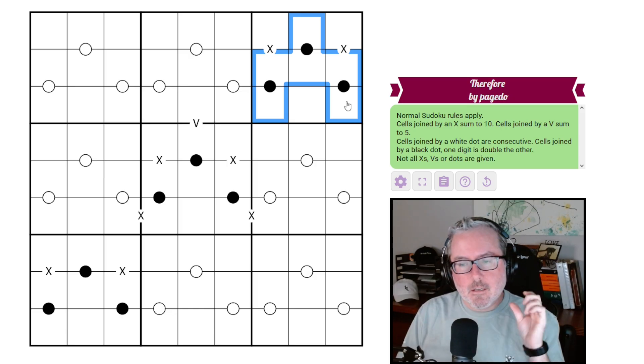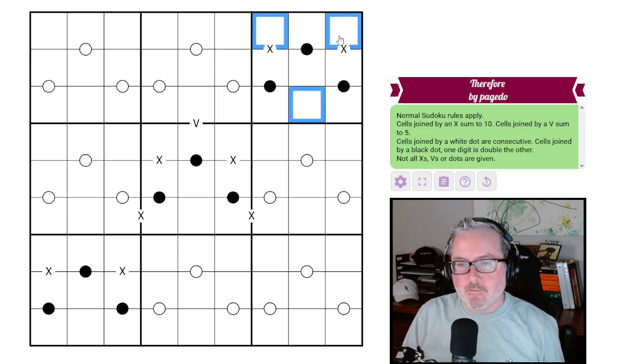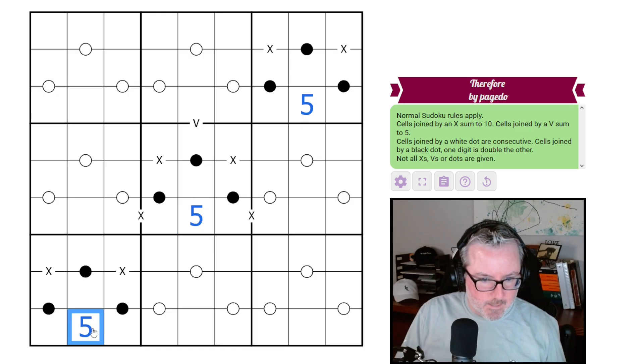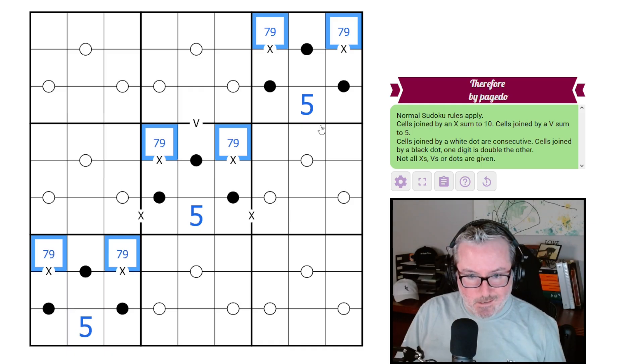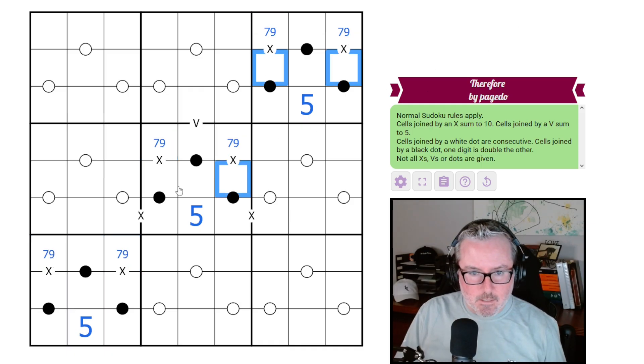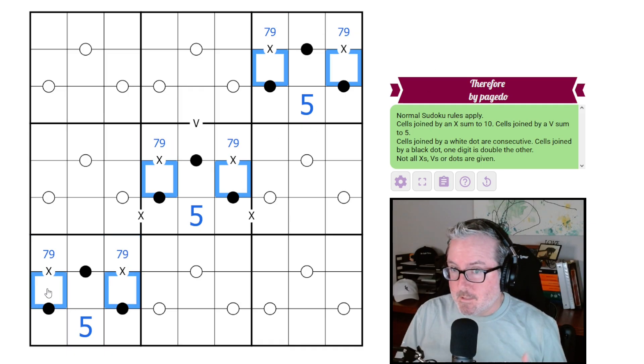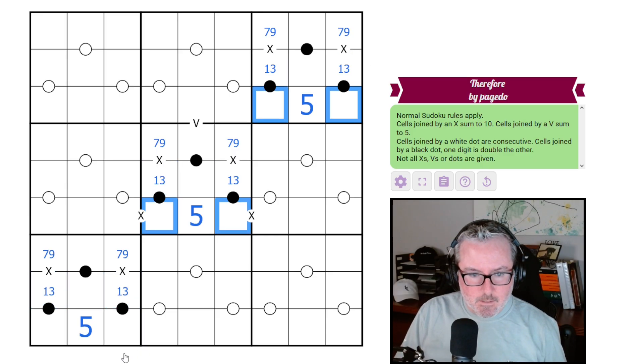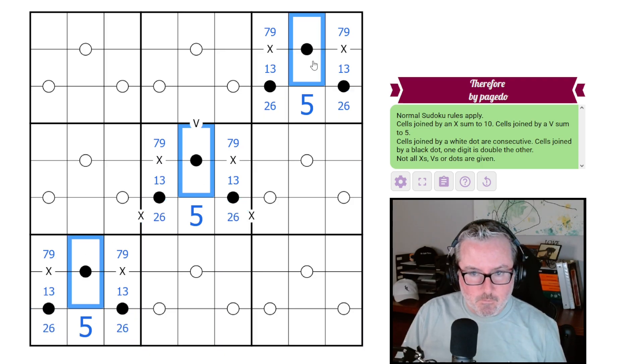The obvious thing is these guys here. We've done this before. We have three sets of black kropki in a contained region, meaning that the groupings must be a one-two, a four-eight, and a three-six. And the remaining digits will be fives, sevens, and nines. Well, you can't put fives on an X, so that's a five, that's a five, and that's a five.